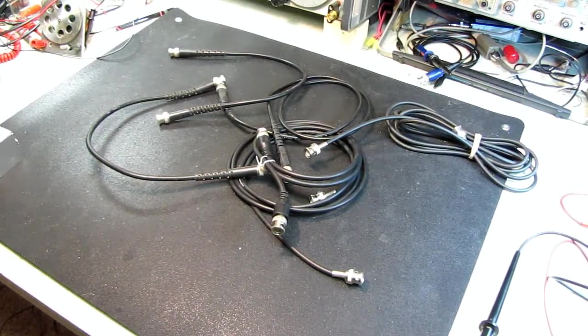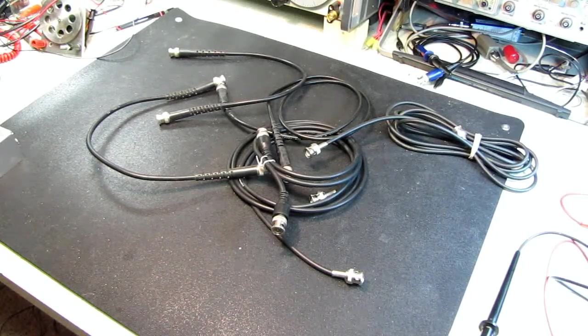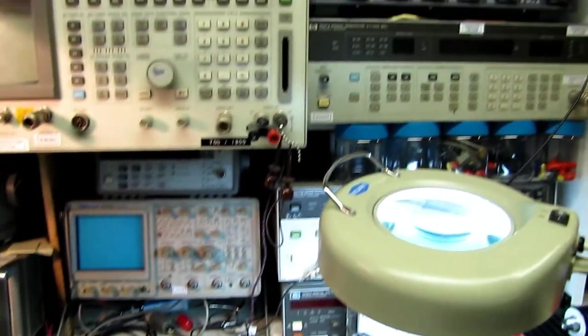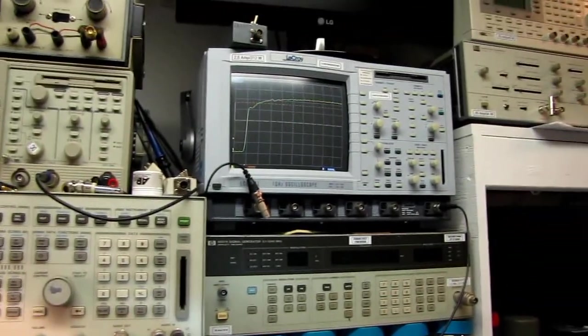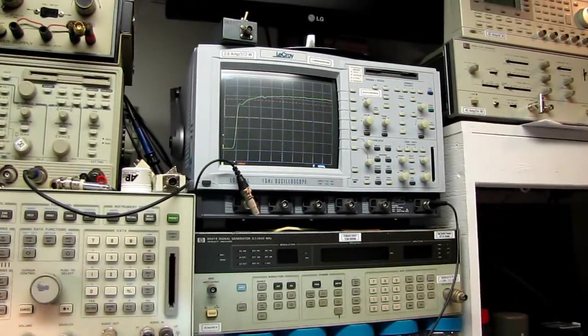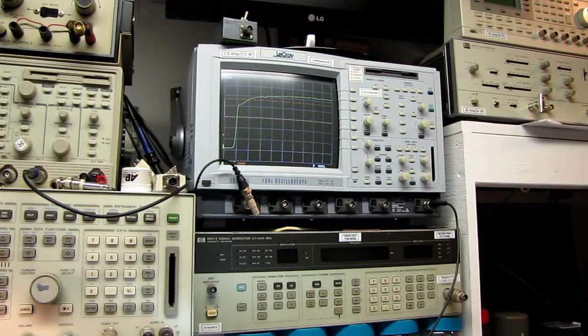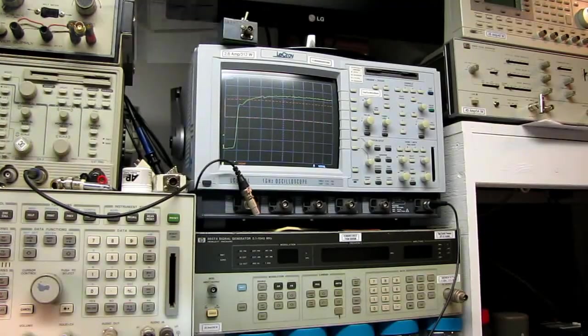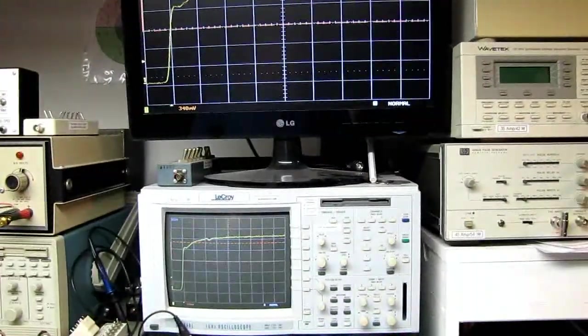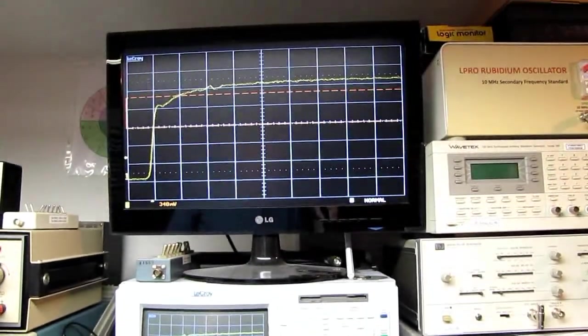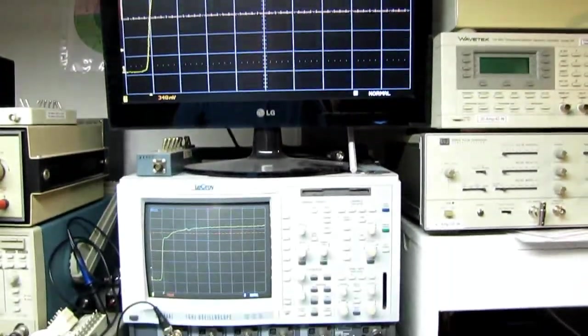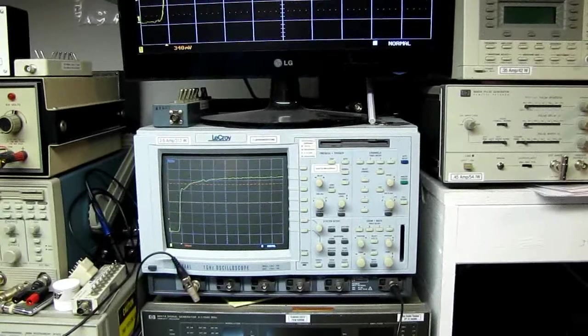It's really quite simple. All you need is a halfway decent scope and a signal generator that'll produce pulses with a pretty fast rise time. I've hooked up a monitor up here - it might be a little bit easier to see in the camera than the scope display.